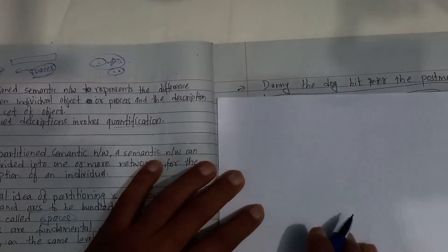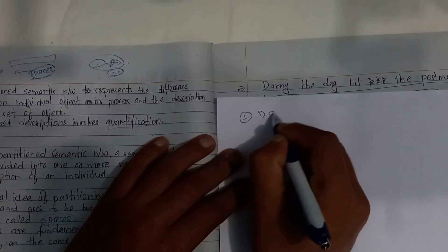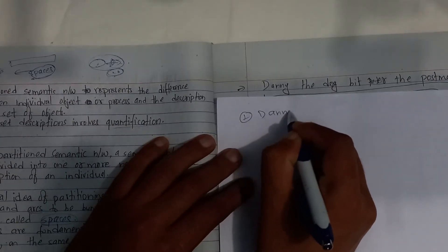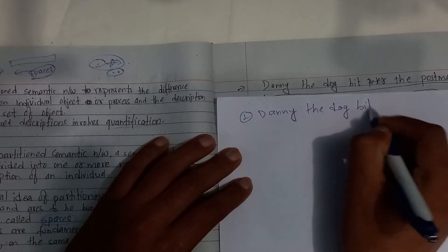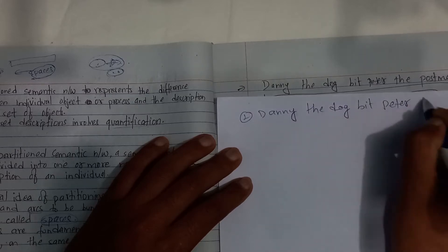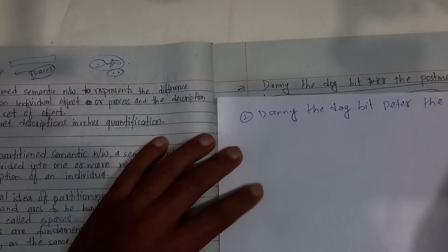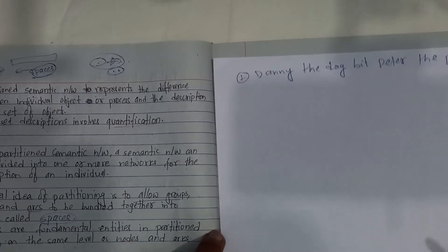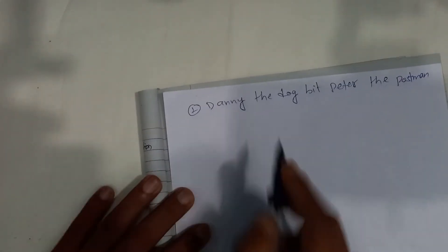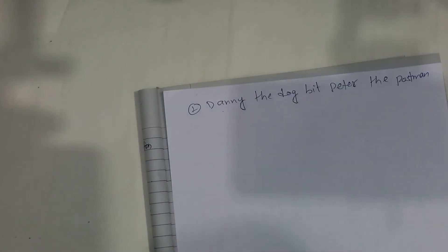Now I will take an example. For example: Danny the dog bit Peter the Postman. The semantic net is simple. Danny is a dog, Peter is a postman.